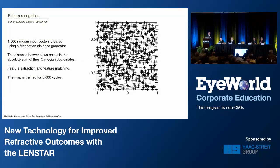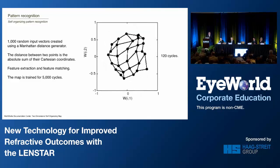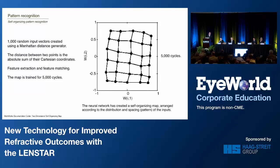Here's a little example of how a very crude form of pattern recognition works, using an artificial neural network. We generate a thousand random input vectors, put them inside this little box, and ask an artificial neural network to tell us what the internal organization is. We use a technique called feature extraction and feature matching, and run it through a computer 5,000 times. All of these dots are generated using something called the Manhattan distance generator — the absolute sum of Cartesian coordinates. Here's 40 cycles, 120 cycles, 500 cycles, and 5,000 cycles — and this seemingly chaotic mess can actually be figured out by this form of mathematics, producing a self-organizing map.